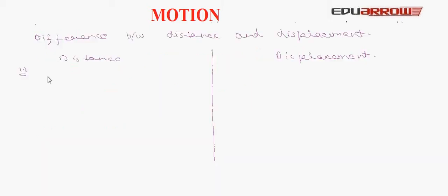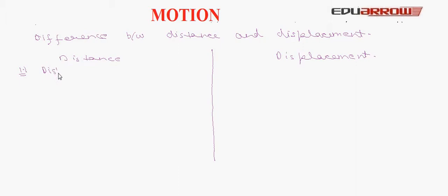Distance is a scalar quantity, while displacement is a vector quantity.